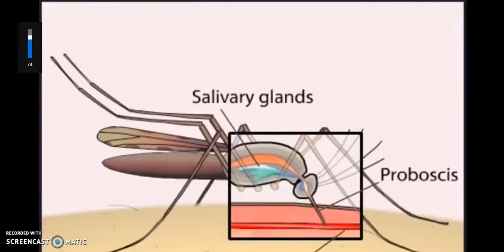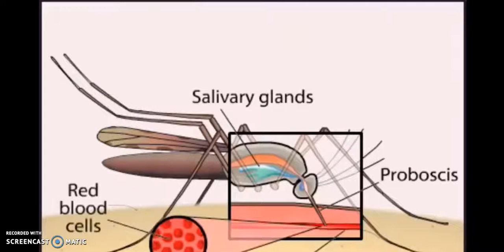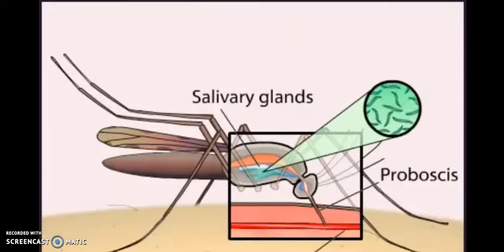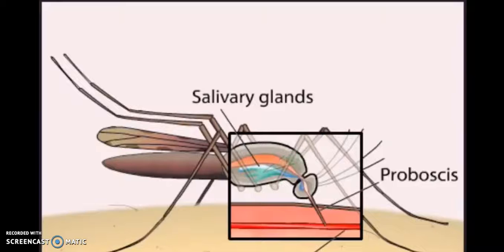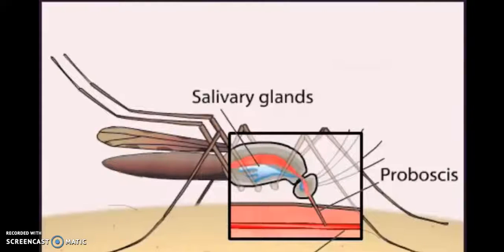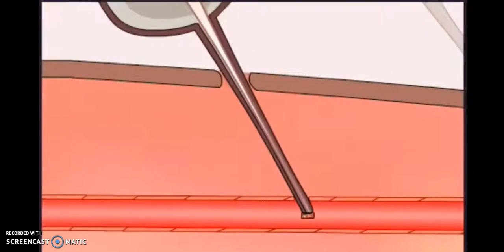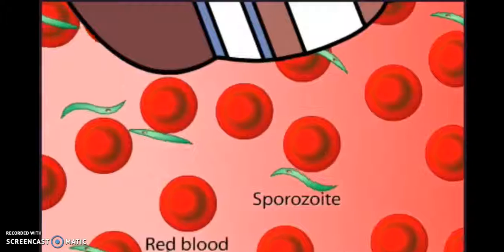The parasite is transmitted when a female Anopheles mosquito takes a blood meal. The sporozoites are injected with her saliva, which contains an anticoagulant that promotes a steady blood flow. The circulatory system then delivers the sporozoites to their target: the liver.